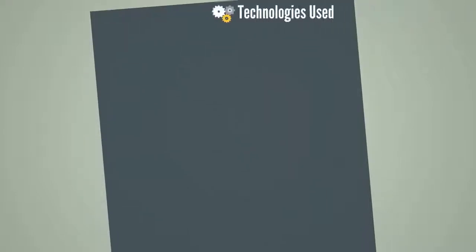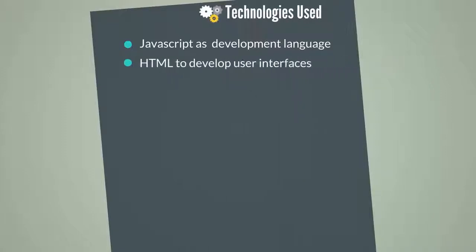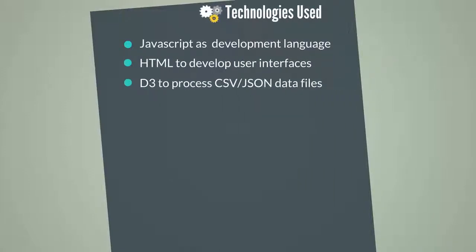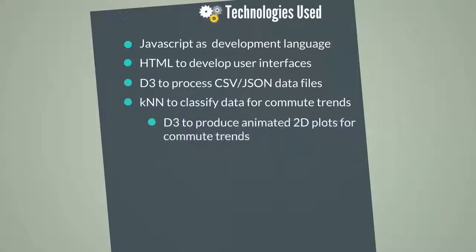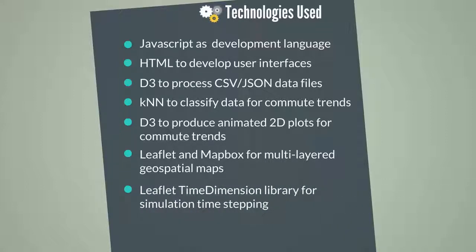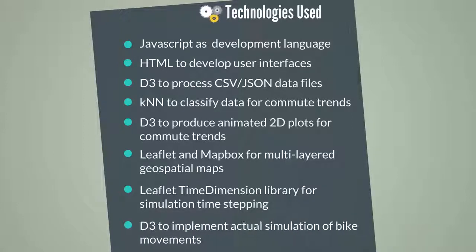To implement this project, I used the following concepts and technologies: JavaScript as the main development language, HTML to develop the user interfaces, D3 for processing CSV and JSON data files, k-nearest neighbor to classify data for commute trends, D3 to produce animated 2D plots for commute trends, Leaflet and MapBox to do the multi-layer geospatial maps, the open source Leaflet Time Dimension library to implement the time stepping during the simulation, and finally D3 to implement the actual simulation of the bikes.